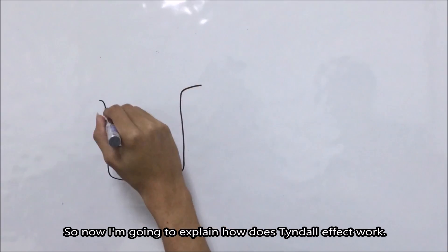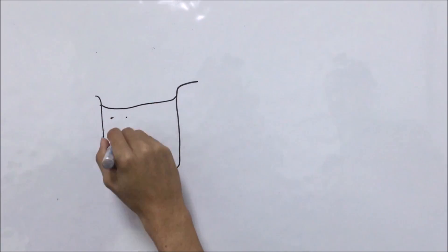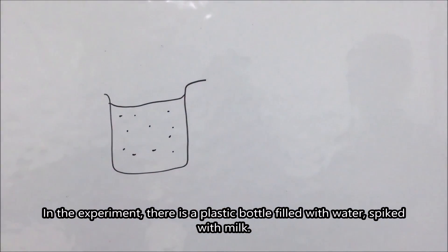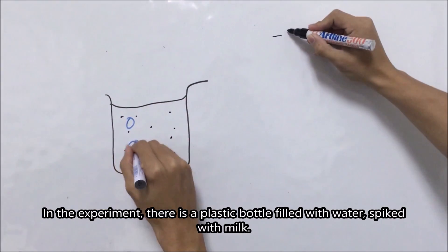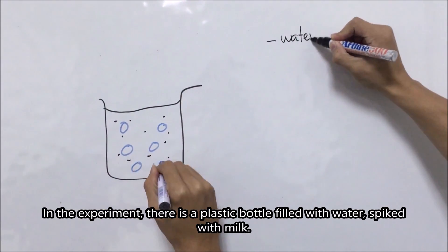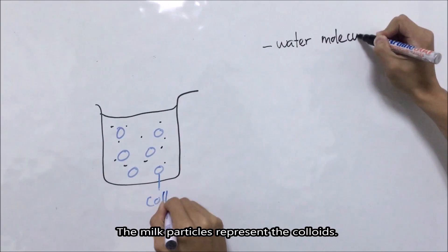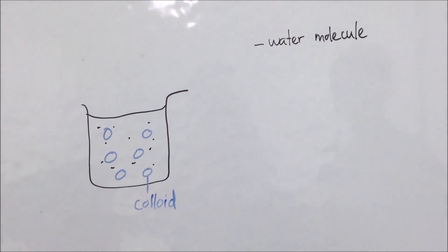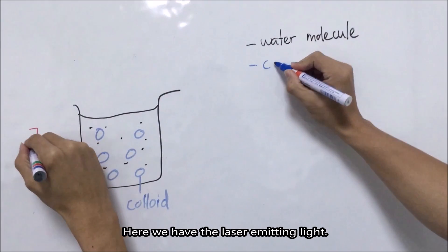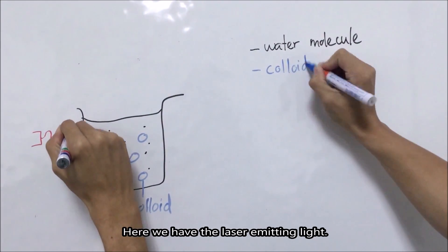So now I am going to explain how the Tyndall effect works. In the experiment, there is a plastic bottle filled with water spiked with milk. The milk particles represent the colloids. And here, we have the laser emitting light.